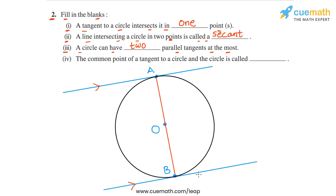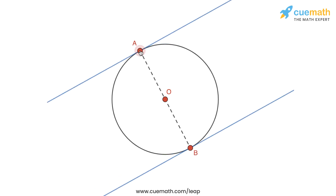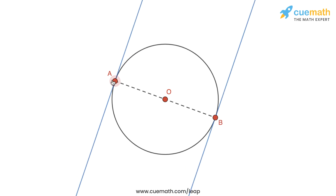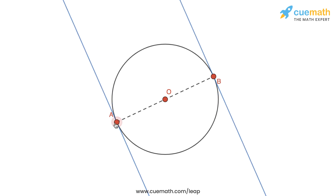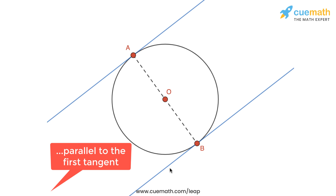A simulation shows a circle with center O and diameter AB, with tangents drawn at A and B that are parallel. Moving point A along the circle, the tangents at the endpoints of the diameter continue to be parallel. This confirms that you can draw at most two parallel tangents to a circle — for any tangent, there is exactly one more parallel tangent.